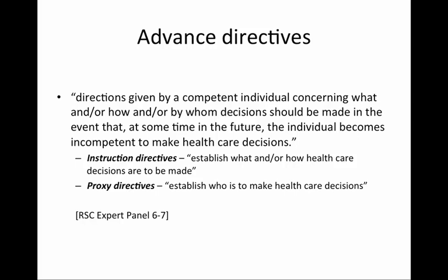Advance directives are directions given by a competent individual concerning what and/or how and/or by whom decisions should be made in the event that, at some time in the future, the individual becomes incompetent to make healthcare decisions. An example is a woman who has signed a document stating that should she fall into a persistent vegetative state, she does not wish to receive artificial hydration or nutrition. Or a man who has signed a document stating that when he is incompetent, he wishes his wife to make all healthcare decisions on his behalf. There are two kinds of advance directives: instruction directives, which establish what and/or how healthcare decisions are to be made, and proxy directives, which establish who is to make healthcare decisions.